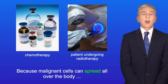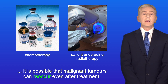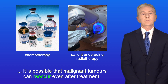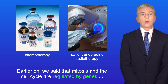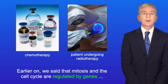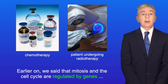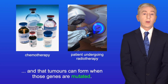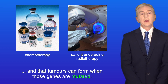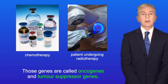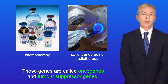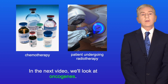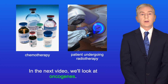Because malignant cells can spread all over the body, it's possible that malignant tumours can reoccur even after treatment. Earlier we said that mitosis and the cell cycle are regulated by genes and that tumours can form when those genes are mutated. Those genes are called oncogenes and tumour suppressor genes, and in the next video we look at oncogenes.